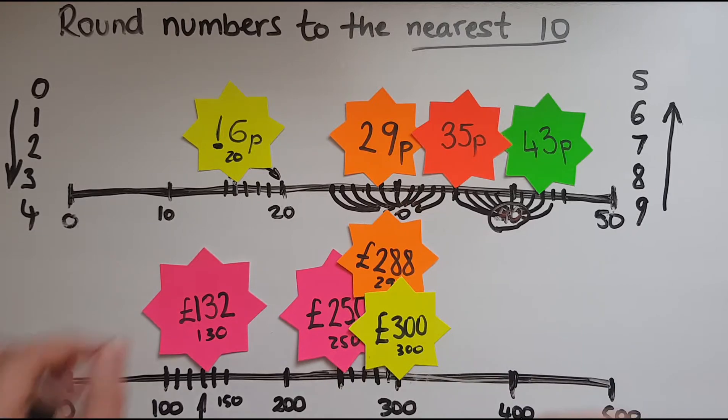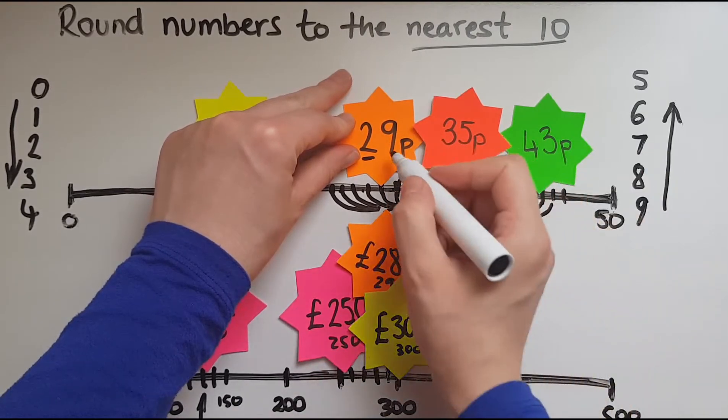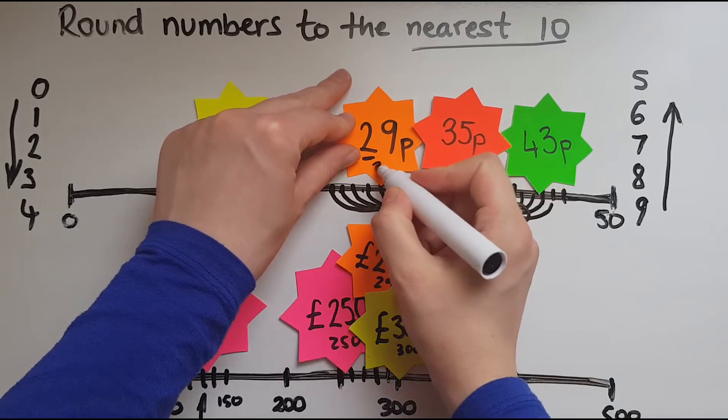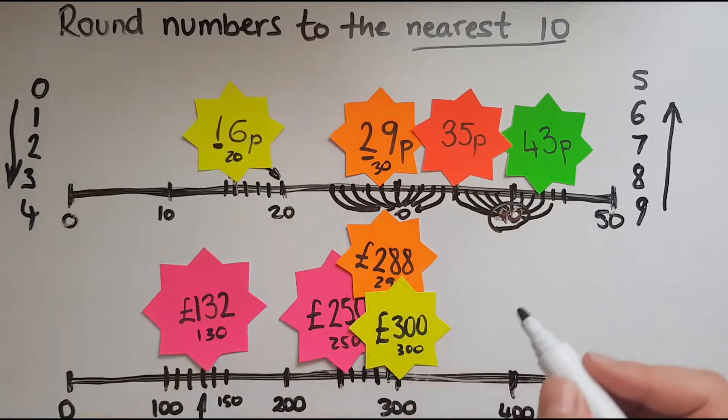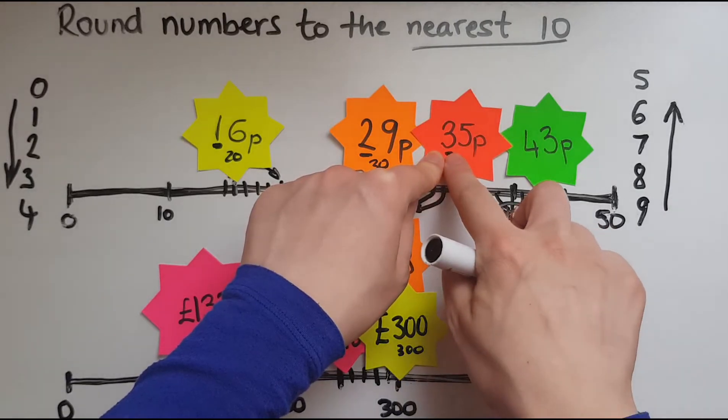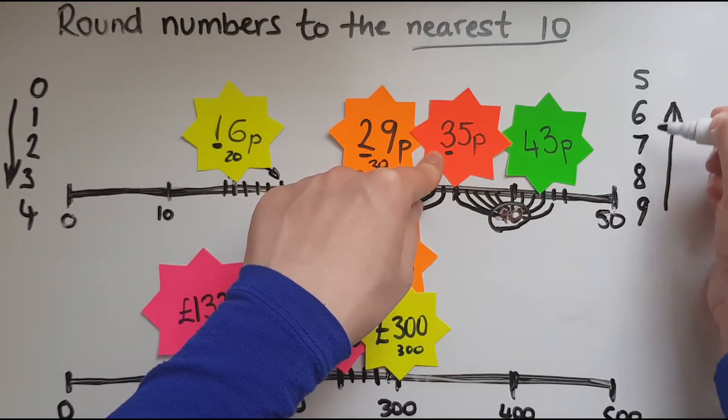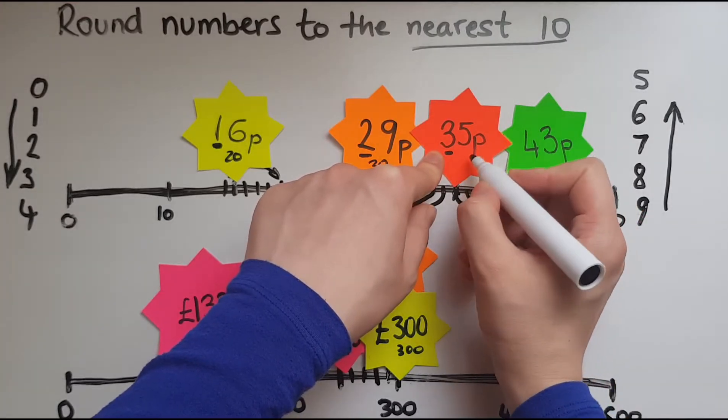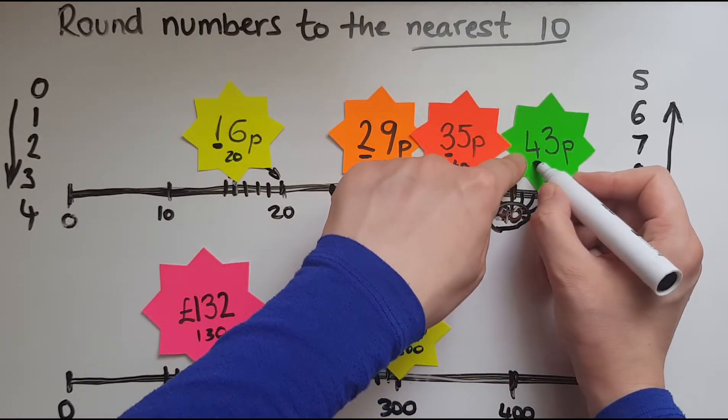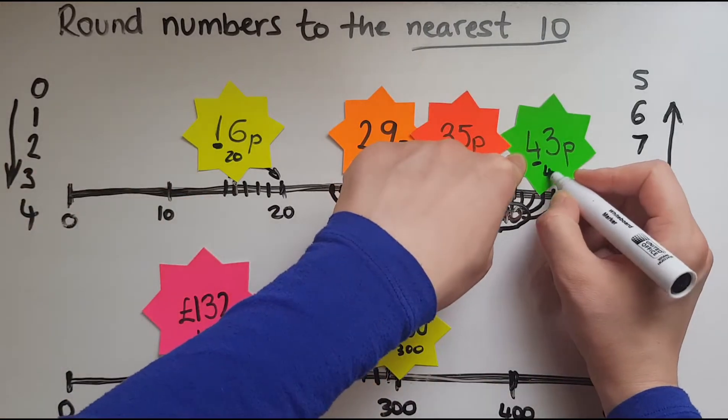Now let's look at 29. Again, we need to round to the nearest 10. So that's the tens digit. Looking at the digit on the right, the units, that is a nine, which means that we're going to be rounding up. So this becomes 30. 35. Again, we need to round that either down or up. So it's either 30 or 40. So we've got the five to look at. So that five is in the digits that mean we round up. So that's going to be 40. And 43. Again, rounding this into 40 or 50. Look at three. That is one of the digits that we round down. So we'll go to 40.